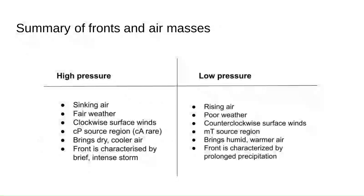To summarize: high pressure is sinking air with fair weather and clockwise winds. A continental polar source region — which for us is Canada — brings dry, cooler air. When a cold front comes through ahead of high pressure, there's a brief, intense storm followed by rapid clearing and fair weather. Low pressure is the opposite — it's rising air and stormy weather, with counterclockwise surface winds. In New York, it would be a maritime tropical source region from the Gulf of Mexico, bringing humid, warmer air and prolonged precipitation after the front comes through. I hope you learned a little bit about fronts and air masses. Thanks for watching this episode of Class Captures.